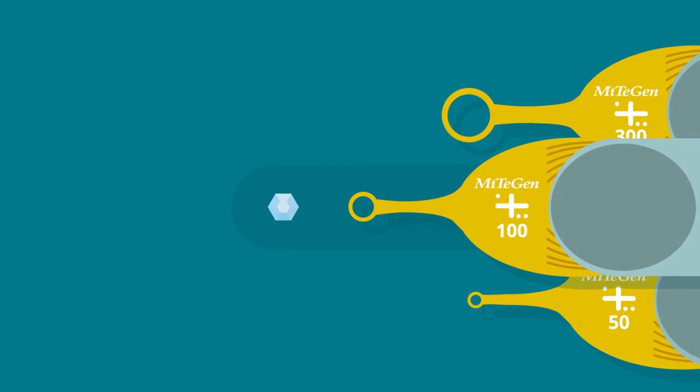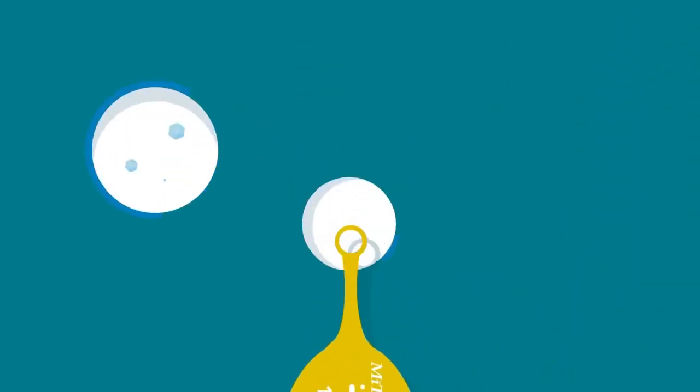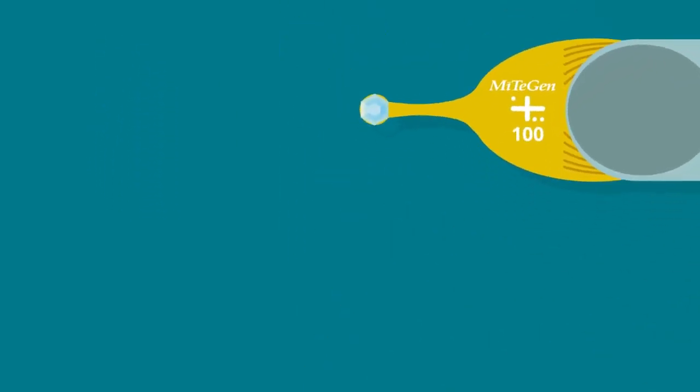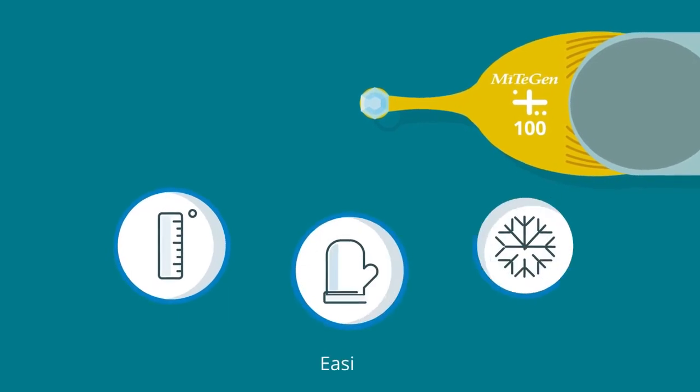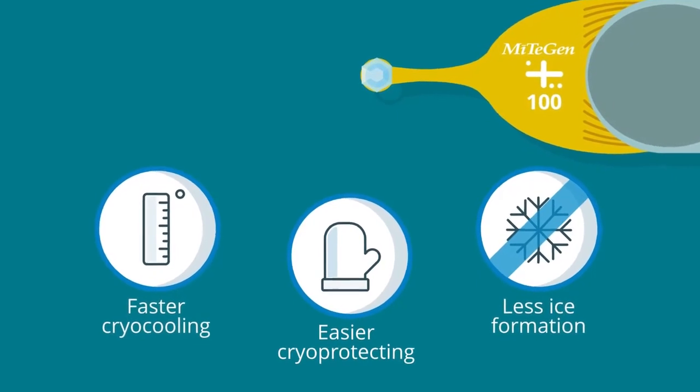Users select a loop size that is slightly smaller than the crystal. They then easily harvest the crystal, which sits directly onto the surface of the loop. This reduces unwanted fluid around the crystal, leading to easier cryoprotecting, faster cryocooling and less ice formation.